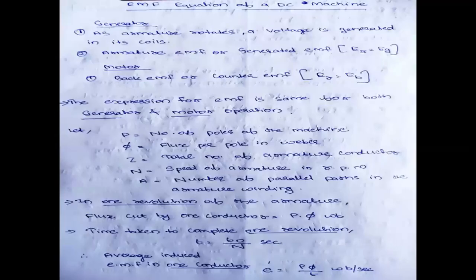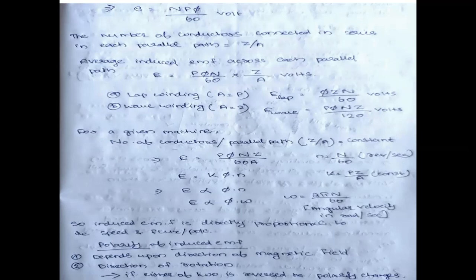The windings can be connected in two ways: lap winding and wave winding. For lap winding, A = P (number of parallel paths equals number of poles), so P and A cancel, giving E_lap = phi × N × Z / 60. For wave winding, A = 2, so E_wave = P × phi × N × Z / 120. These are the two standard equations to remember.